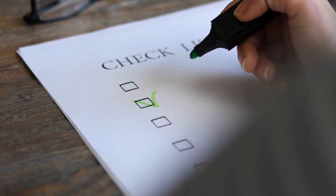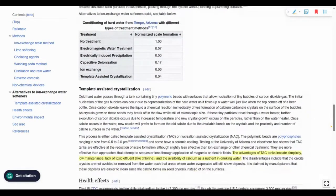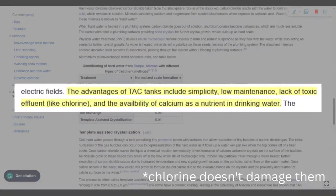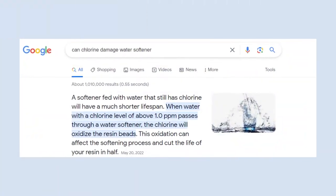There are of course other differences. Water conditioners often come with whole house filters so they both purify and soften the water. They aren't affected by chlorine. But chlorine can damage water softeners.